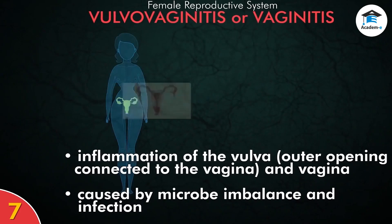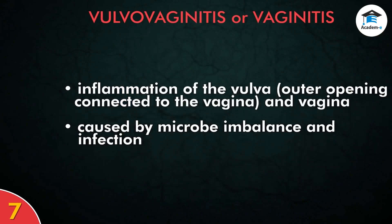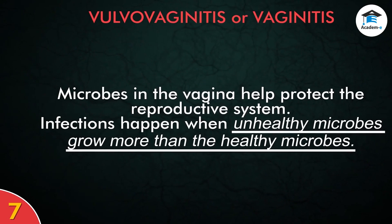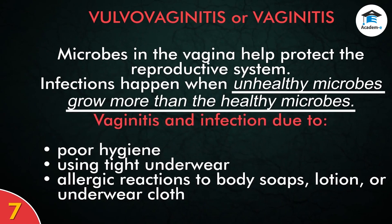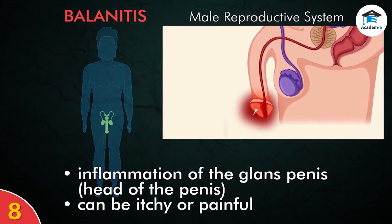Vulvovaginitis, or vaginitis, is the swelling or inflammation of the vulva — the outer opening connected to the vagina — and the vagina. Microbe imbalance and infection often cause vaginitis. Microbes in the vagina help protect the reproductive system; infections often happen when unhealthy microbes grow more than the healthy microbes. Poor hygiene, using tight underwear, and allergic reactions to body soaps, lotion, or underwear cloth can cause vaginitis.